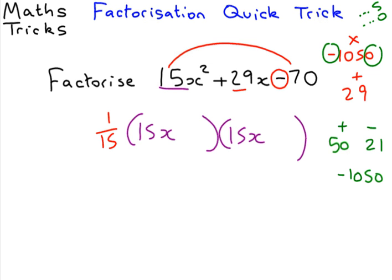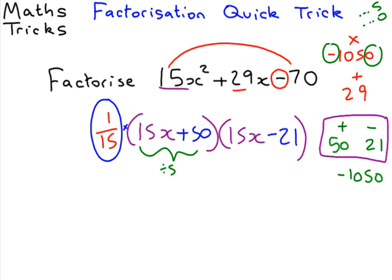The only hard bit in this method is getting these numbers, and I know that that's quite difficult. I've done it quite quickly in my head, trying a few different numbers. So we've got our numbers, plus 50, minus 21. Now we've got to get rid of this divide by 15. And if you get confused about why I'm saying divide by 15, that's because if we're timesing by a fraction, it's the same as dividing by the denominator of the fraction. Basically, timesing by 1 over 15 is the same as dividing by 15, just two different ways to write it. We notice we can divide this one by 5 and the second bracket by 3. So let's do it. We're going to get 3x plus 10 and we're going to get 5x minus 7.